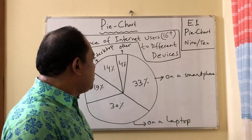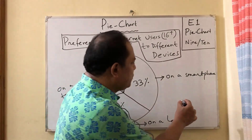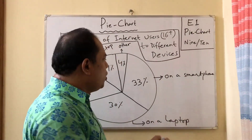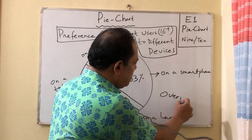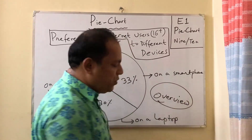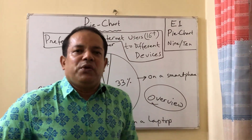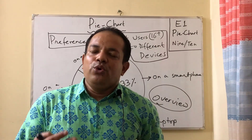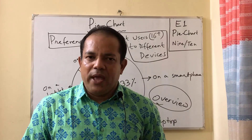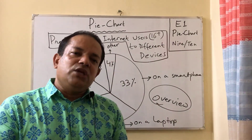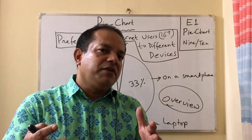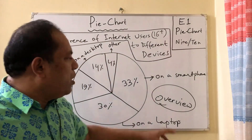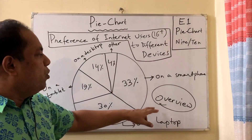Now we will go for the overview. In your second paragraph, you will go for overview. Your overview will cover the highest and lowest values. In your introduction you can write at least 45 words, and in the overview — your second paragraph — you will write about the highest and lowest. For example, from the pie chart we see that people who are aged 16 or over prefer to access the internet by using a smartphone, and the percentage is 33%, which is the highest.